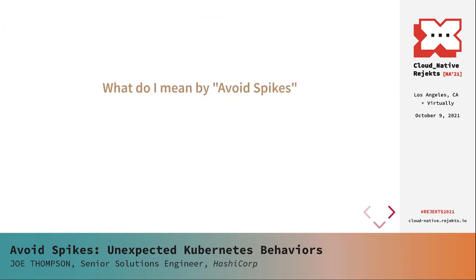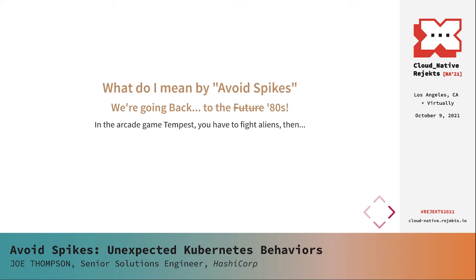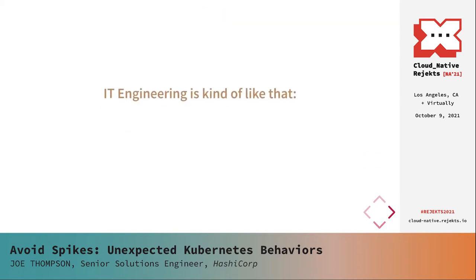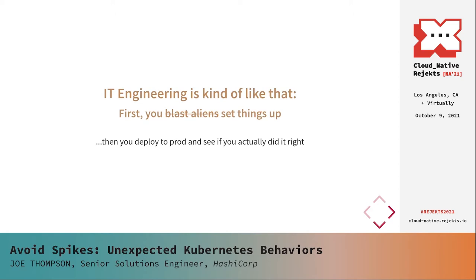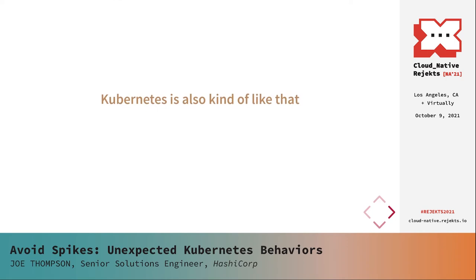Why the name Avoid Spikes? Back in the 80s there was a really fun arcade game called Tempest — fight the aliens, save the universe, space battle kind of thing. Each level involved fighting the aliens in a warp tunnel, then warping to the next level. But some levels had aliens that left spikes in the warp tunnel that you had to either destroy or avoid during the warp. Just when you thought you finally nailed it and were home free, zap — suddenly you have an incident on your hands. Kubernetes can be like this too.